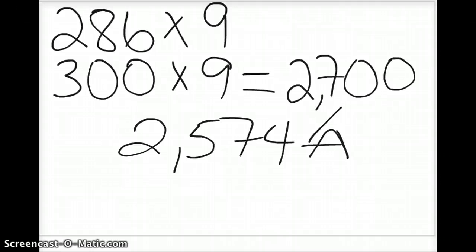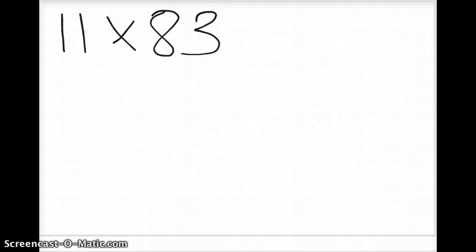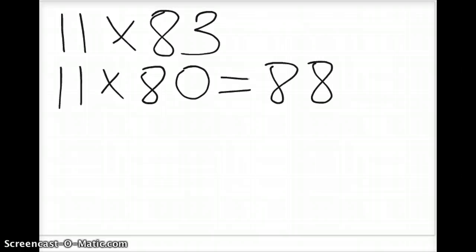Let's do another example. 11 times 83. This is one that you might find a couple different answer choices. So I'm going to use compatible numbers. If you leave 11 as 11 because I know my multiples of 11, and then times 80, I'm going to take the 83 down to 80. 8 times 11 is 88. I have one zero in my question, so that would be 880. That's correct.